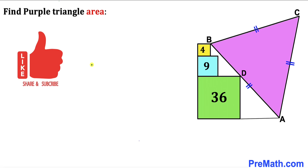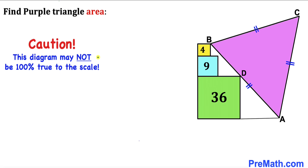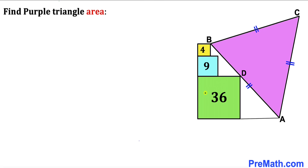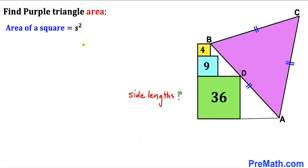Please don't forget to give a thumbs up and subscribe. Keep in mind that this figure may not be 100% true to scale. Let's get started. Since we are dealing with three squares, we are going to find out the side lengths of these squares. Let's recall the area of a square formula: area equals s squared, where s represents the side length of the square.